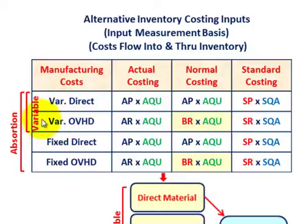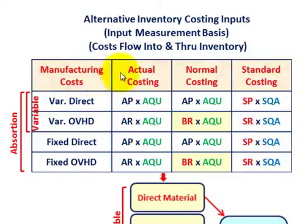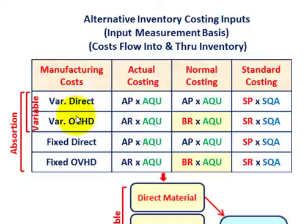Relating this back to our methods: variable costing uses variable direct costs — materials and labor — plus variable overhead. Absorption costing includes variable direct and variable overhead plus fixed direct costs and fixed overhead. This determines what flows into inventory under each method.